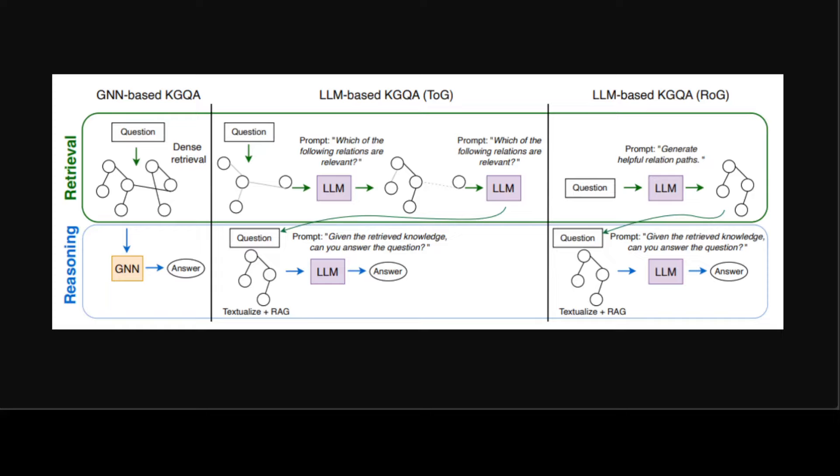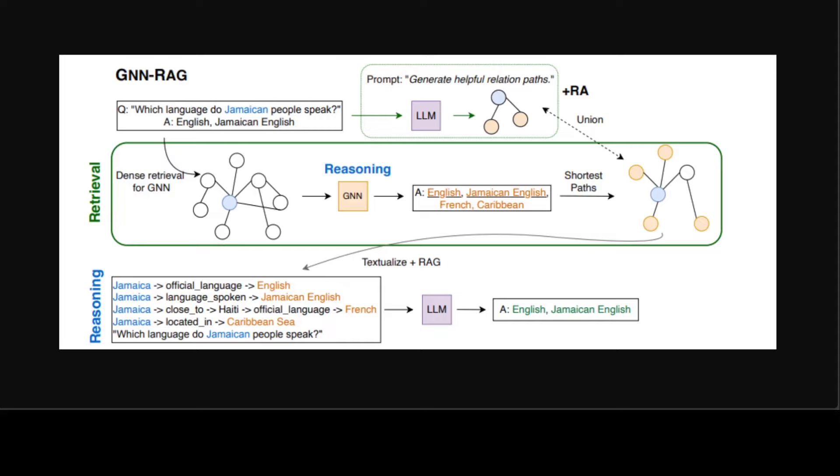So if you look at this diagram again, this is where the GNN is reasoning over a dense subgraph to retrieve candidate answers along with the corresponding reasoning path or the shortest path from the question entities to answer and that is what the graph does. The retrieved reasoning paths optionally combined with retrieval augmentation are verbalized and given to the LLM for RAG.